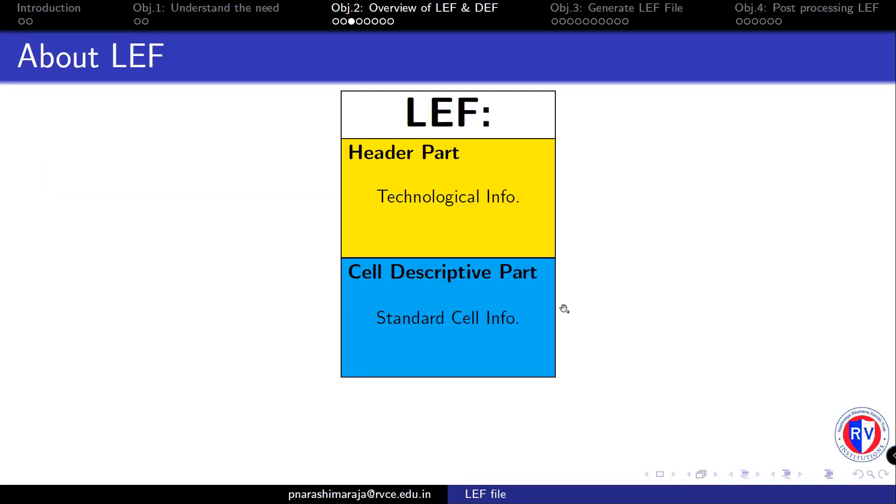The LEF file describing a standard cell library has generally two parts. The header part basically contains information related to PDK technology that we are using. The cell descriptive part contains information related to cells that we built.